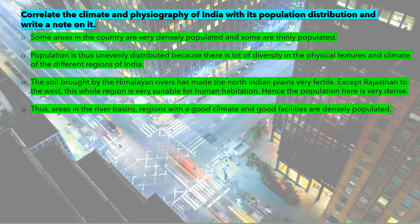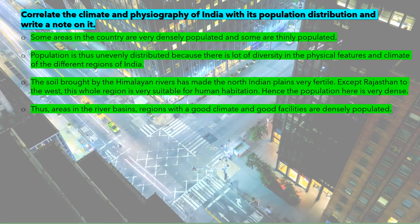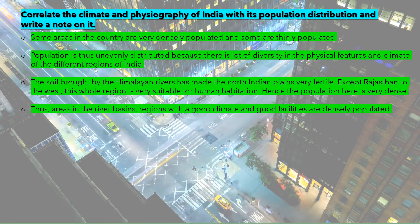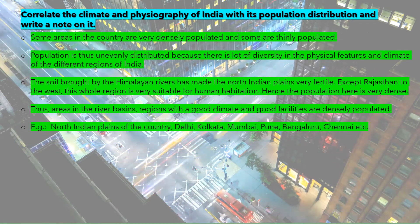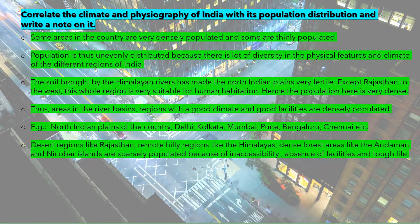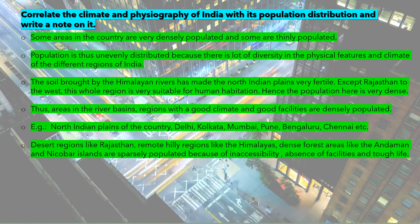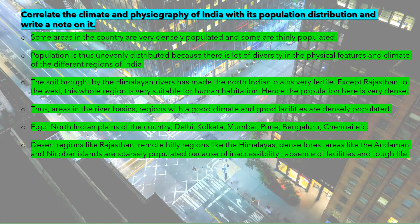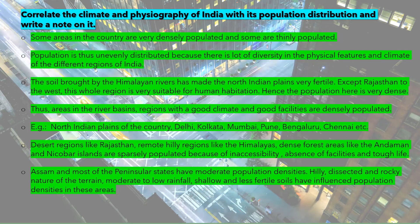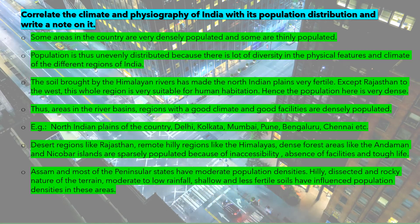Because of the huge population, the government has to provide services like education, hospitals, and security. Examples of densely populated areas include the North Indian plains, Delhi, Kolkata, Mumbai, Pune, Bangalore, Chennai, etc. Desert regions like Rajasthan, remote hilly regions like the Himalayas, and dense forest areas like the Andaman and Nicobar Islands are sparsely populated because of inaccessibility, absence of facilities, and tough life. Assam and most of the peninsular states have moderate population densities, where hilly, dissected and rocky terrain, moderate to low rainfall, and shallow, less fertile soils have influenced population densities.